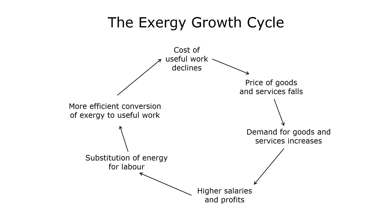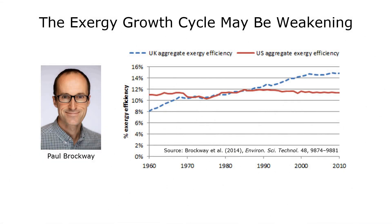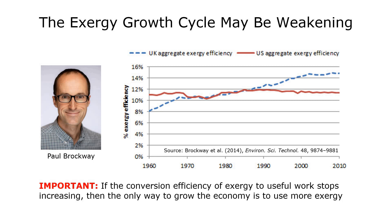Paul Brockway, one of my colleagues at the University of Leeds, has done some interesting research that suggests the exergy growth cycle may be weakening as it becomes more difficult to improve conversion efficiency. You can see in this graph that exergy efficiency in the US has remained pretty flat for a long time, and exergy efficiency in the UK may now be plateauing. These findings suggest we may be approaching physical limits for some conversion processes, or people may be switching to less energy-efficient processes such as air conditioning. If the conversion efficiency stops increasing — in other words, if we can't extract more useful work out of a given amount of exergy — then the only way to grow the economy is to use more exergy.